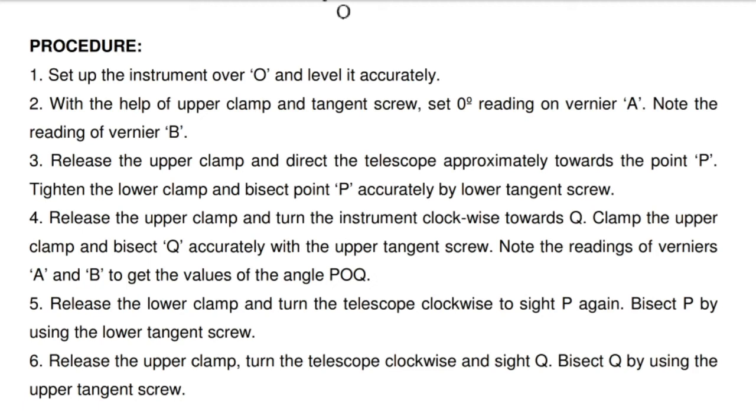Step 5 - Release the lower clamp and turn the telescope clockwise to sight P again. Bisect P by using the lower tangent screw.